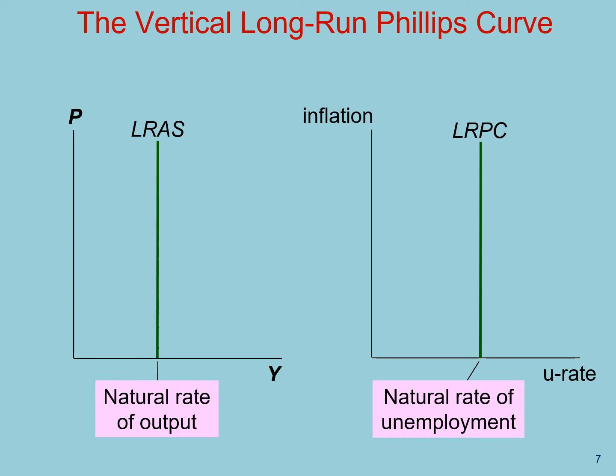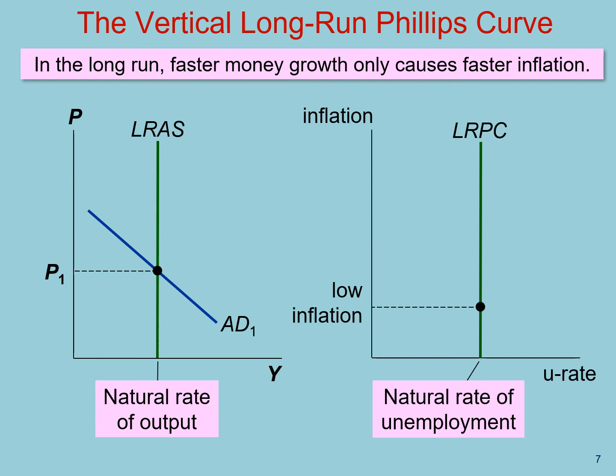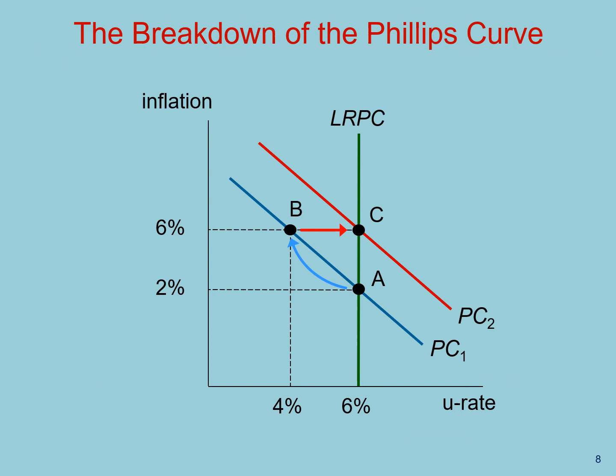The theoretical representation of this idea is the vertical long-run Phillips curve. Just like the long-run aggregate supply curve, the long-run Phillips curve depicts the classical dichotomy. There is no relationship between nominal variables — inflation — and real variables — the unemployment rate. The greater the expansion of the money supply, the faster aggregate demand will shift to the right, resulting in larger increases in prices, or higher inflation. But this higher inflation will not produce lower unemployment. In the long run, unemployment always goes to its natural rate, whether inflation is high or low. In the long run, faster money growth only causes faster inflation.